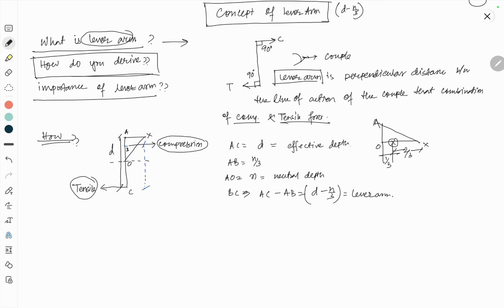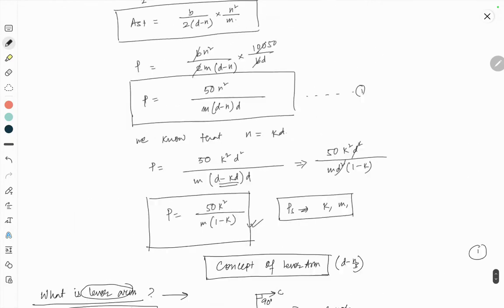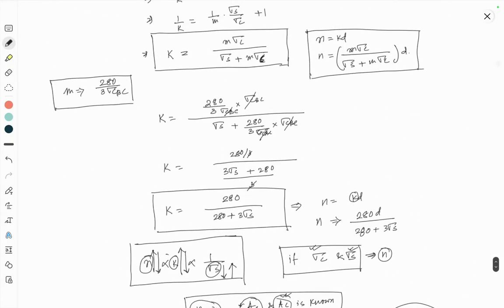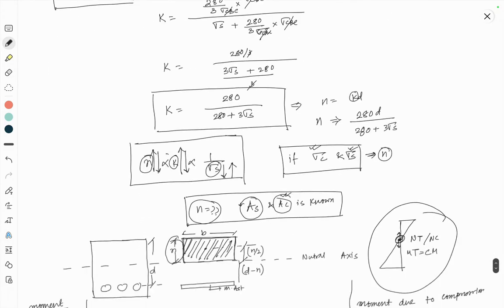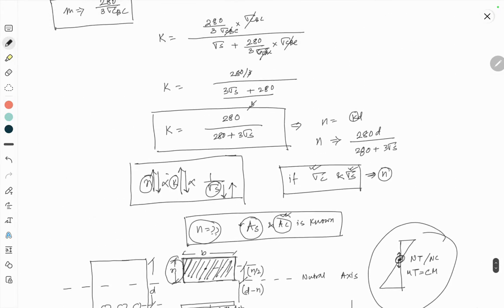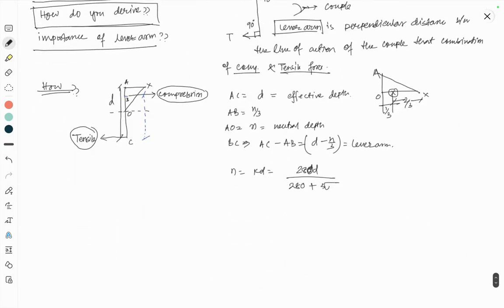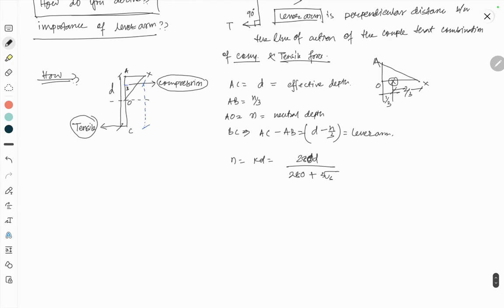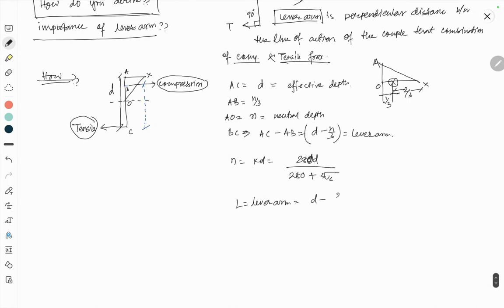In my last video, I discussed about the neutral axis. So here, neutral axis is N equals KD. So N equals 280D by 280 plus 3 sigma S. So in that scenario, lever arm L equals D minus 280D by 280 plus 3 sigma S.